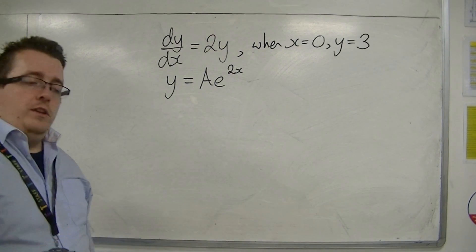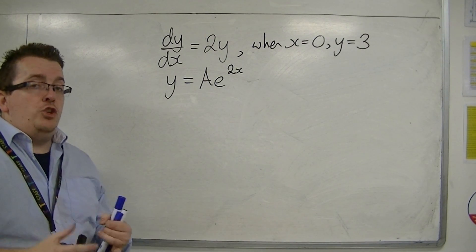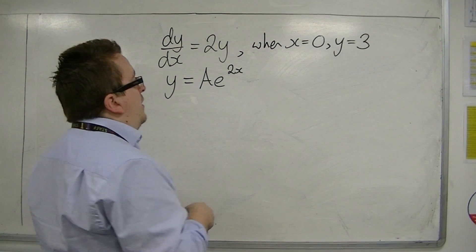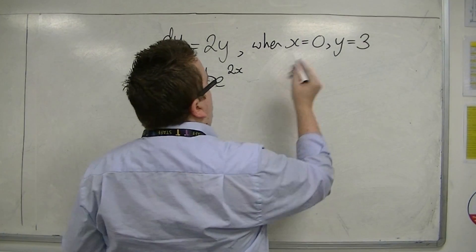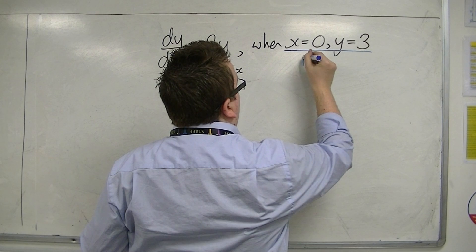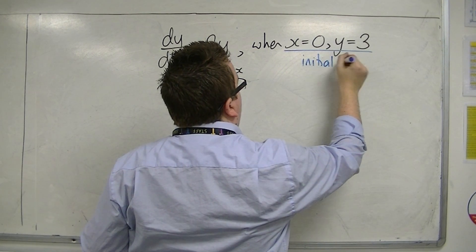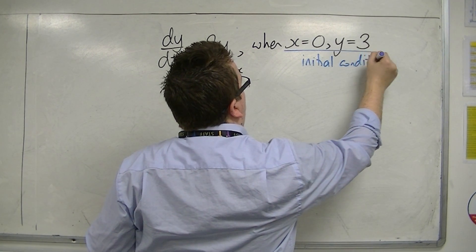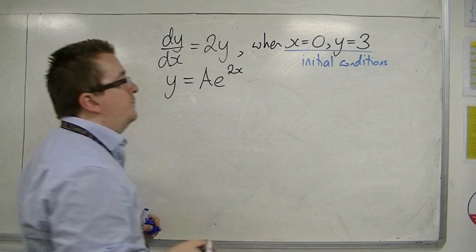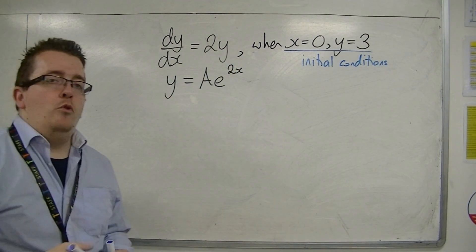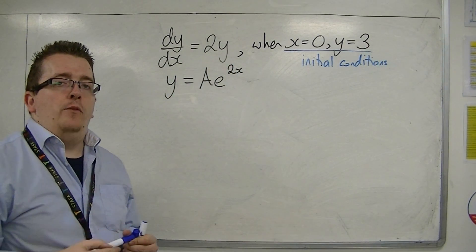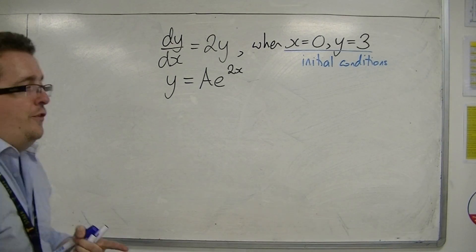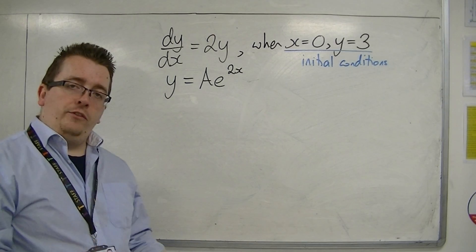Now, you may well be given initial conditions as part of the problem, such as this. These are known as initial conditions, or boundary conditions. They give you a little bit more information about the original curve, and they allow you to find what is known as the particular solution.